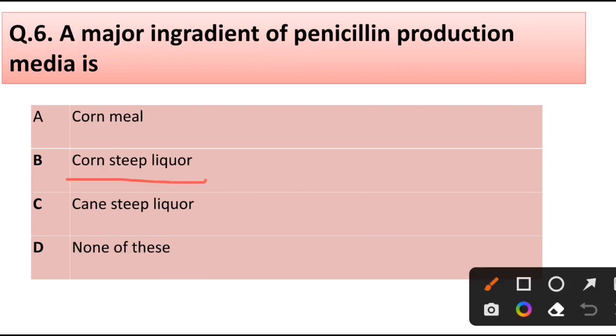Question number 6. A major ingredient of penicillin production media is: corn milk, corn steep liquor, cane steep liquor, or none of these. Correct answer is option B, corn steep liquor.